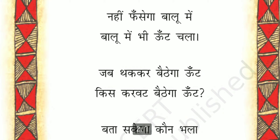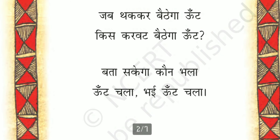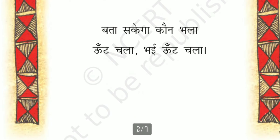Jab thakkar baithega oont — thakkar means getting tired, baithega means sit, so when the camel will sit down after getting tired. Kis karvat baithega oont — karvat means direction, in which direction will the camel sit? Bata sakhega kaon bhala — can anyone tell that? Oont chala bhai oont chala — camel walked, oh camel walked.